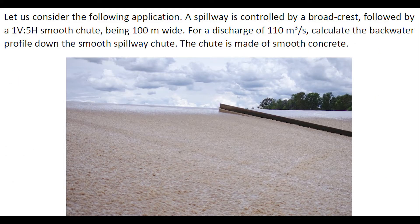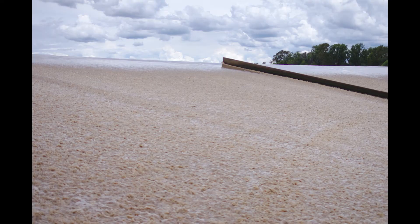Let us consider the following application. A spillway is controlled by a broad crest followed by a 1 in 5 smooth chute, 100 m wide. The discharge is 110 m³ per second. Let us calculate the backwater profile down the smooth spillway chute. We will assume that the chute is made of smooth concrete. This photograph shows a unit discharge of 0.6 m² per second down a 1 in 5 smooth chute at Chinchilla MEL Weir on 27 November 2021.